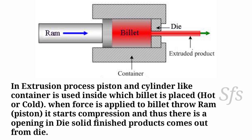When force is applied to the billet through the ram, which is also called the piston, it starts compressing the billet kept inside the cavity. There is only one opening at the front side where the die is fixed. A final solid finished product comes out from the opening of the die, and its shape totally depends upon the type of die used for extrusion.